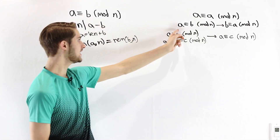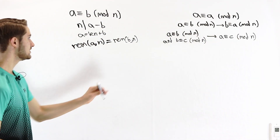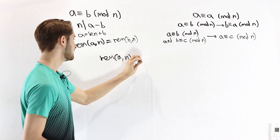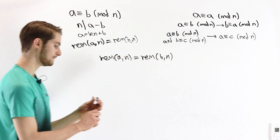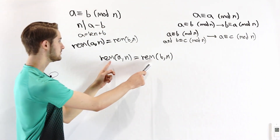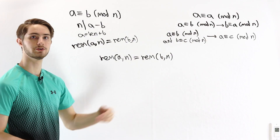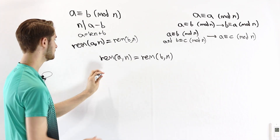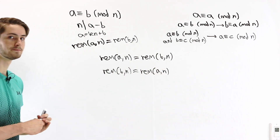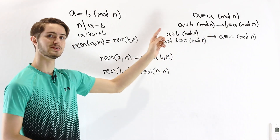The second property is symmetry: if A is congruent to B mod N, then B is congruent to A mod N. If A is congruent to B, by definition the remainder when A is divided by N equals the remainder when B is divided by N. We can simply swap the two sides of this ordinary equation, giving us the remainder of B equals the remainder of A, and therefore B is congruent to A mod N.